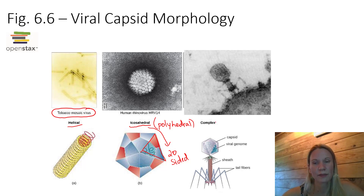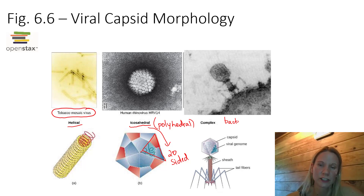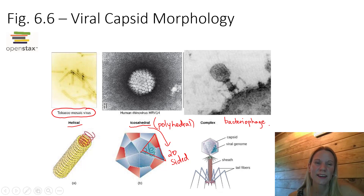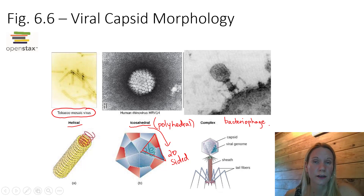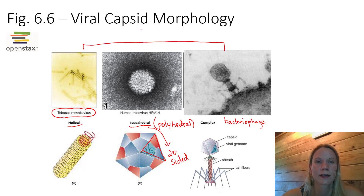And then we have complex. Complex means that it has some other form to the capsid. A good example of that here is a virus called bacteriophage - more on bacteriophage a little bit later. Okay so one thing that all of these viruses have in common is that they are just the genetic core plus a capsid. And we call all of these viruses naked.